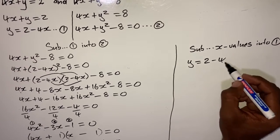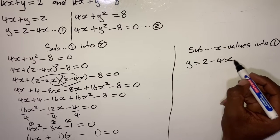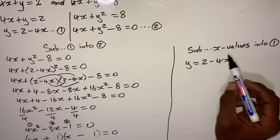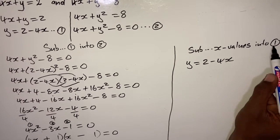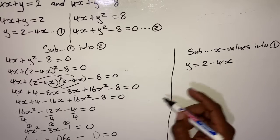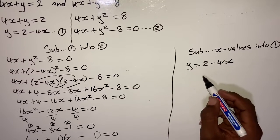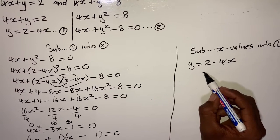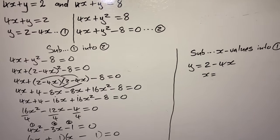I conclude: when x was 1, my y was negative 2. So I have solved simultaneously and found my x values and y values. This sum is complete.